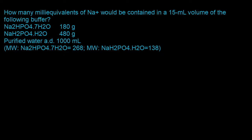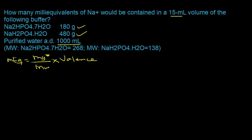Recall that milliequivalents = weight in milligrams divided by (molecular weight × valence). We'll use this equation to find the milliequivalents for both ingredients. We need to scale from the 1,000 milliliter volume down to 15 milliliters, so first we'll find the quantity in milligrams for each ingredient.